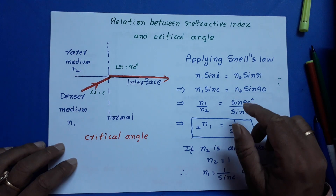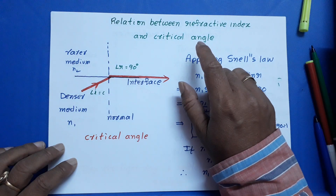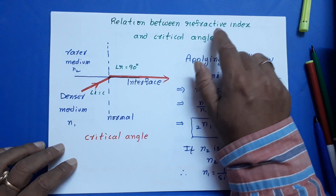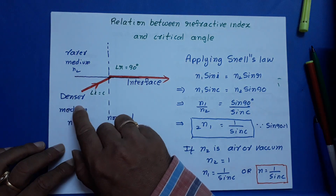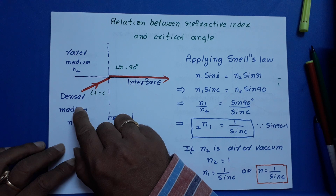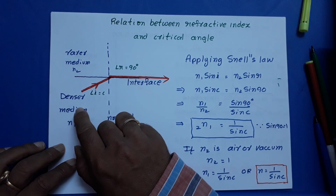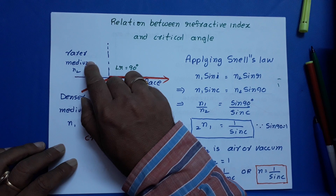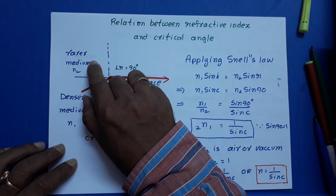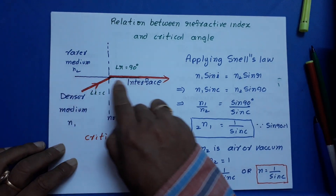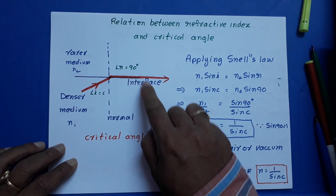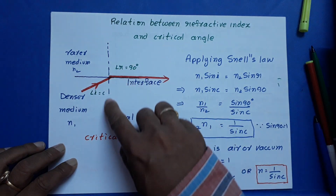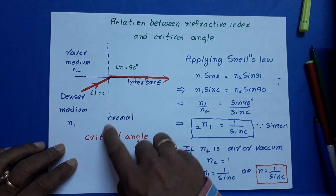Now we are deriving a relation between critical angle and refractive index. This is a denser medium, maybe water or glass. This is a rarer medium, maybe air or vacuum. What is this surface of separation or interface? This is the normal drawn to surface of separation.